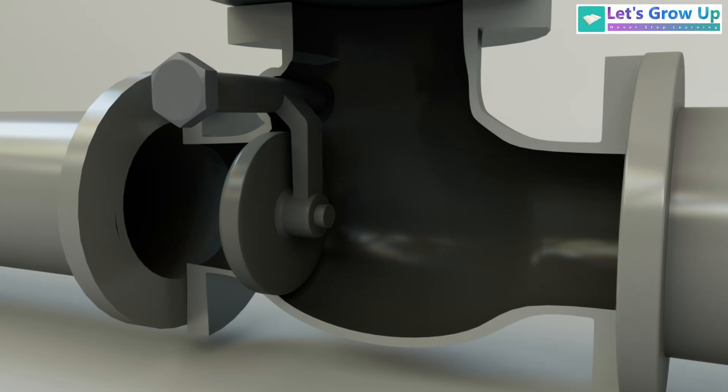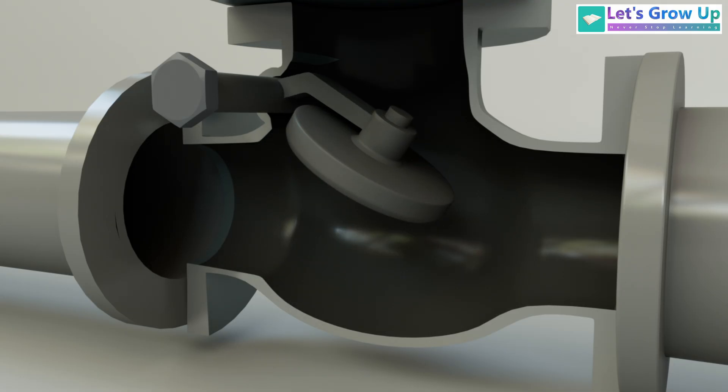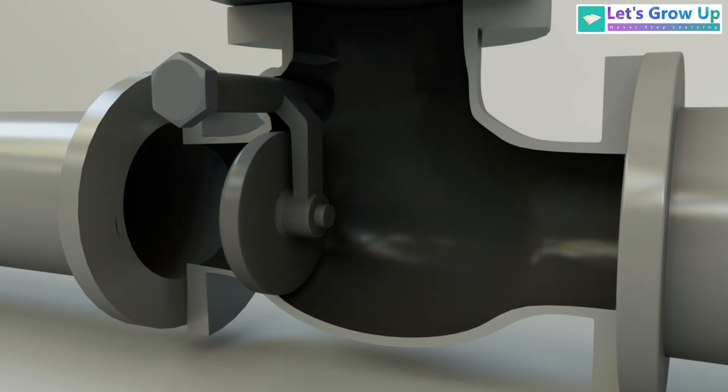When the fluid flows in the correct direction, the pressure pushes this disc open. As long as the flow continues, the door stays open. When the flow slows down or reverses, the disc simply swings back shut due to gravity and the pressure of the backflow, sealing the passage.